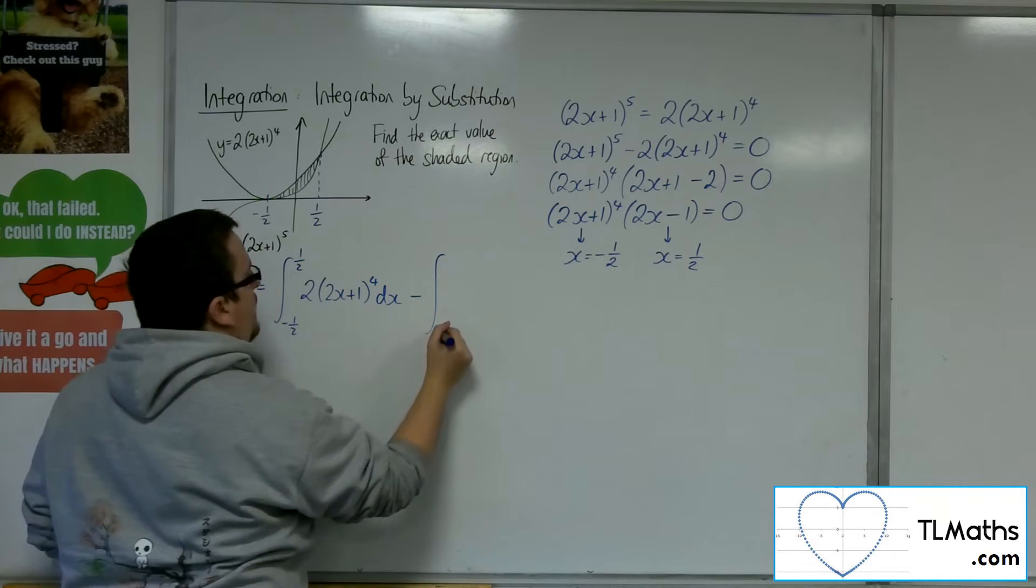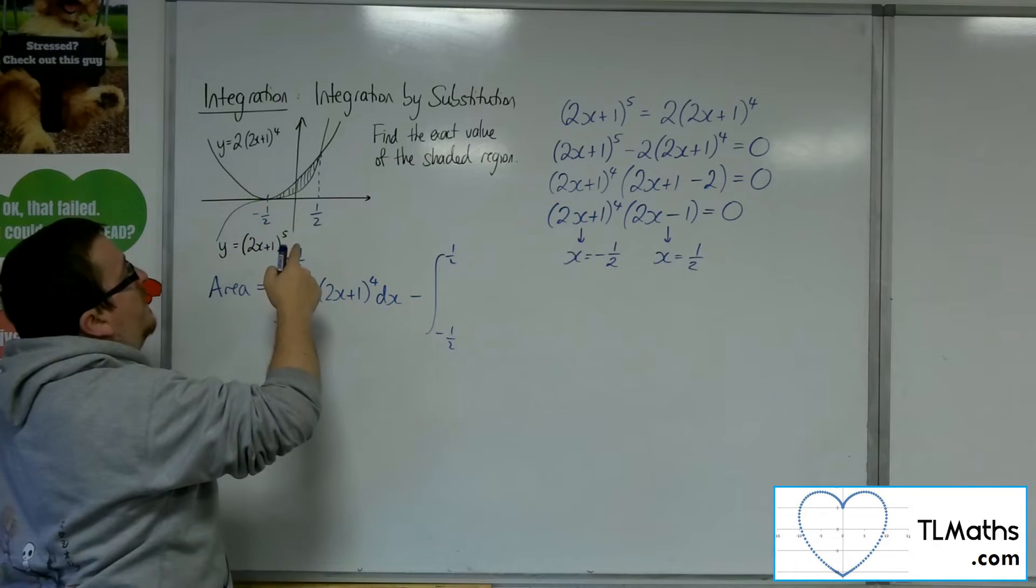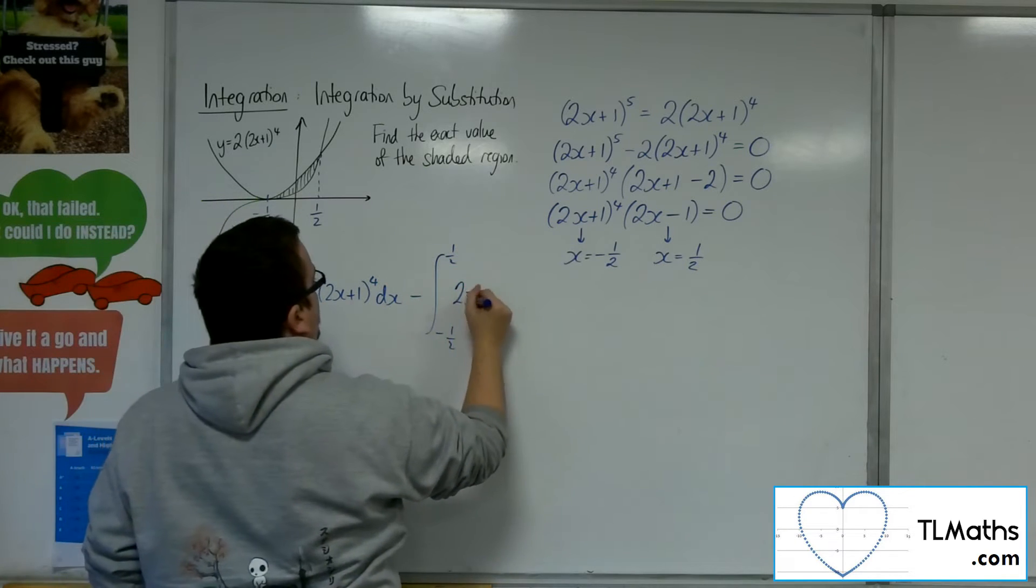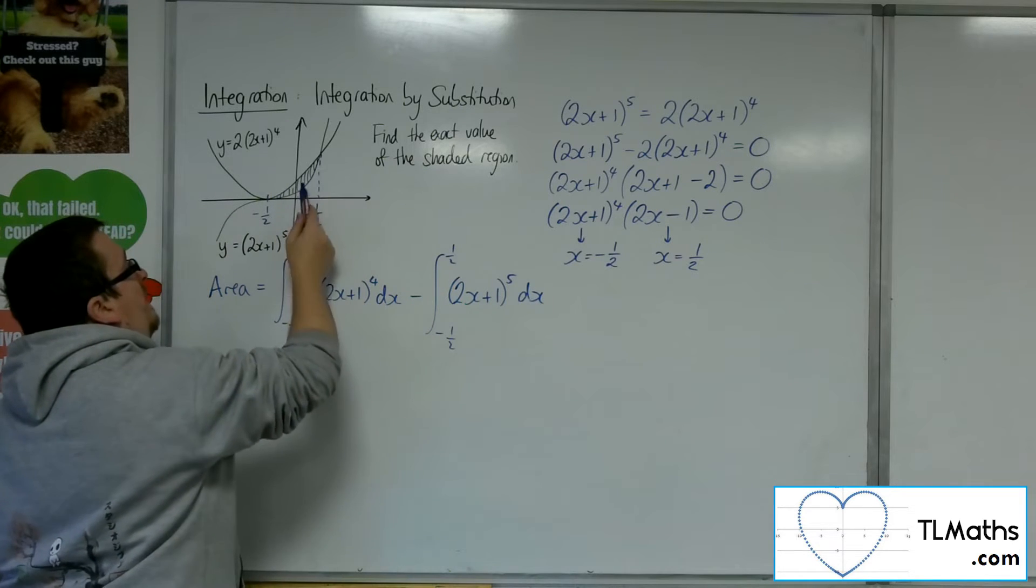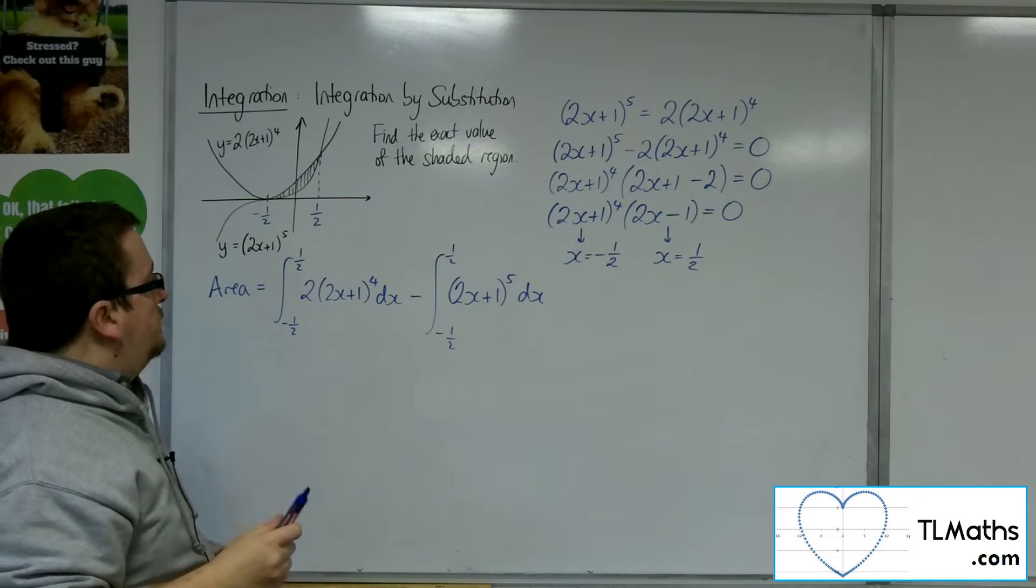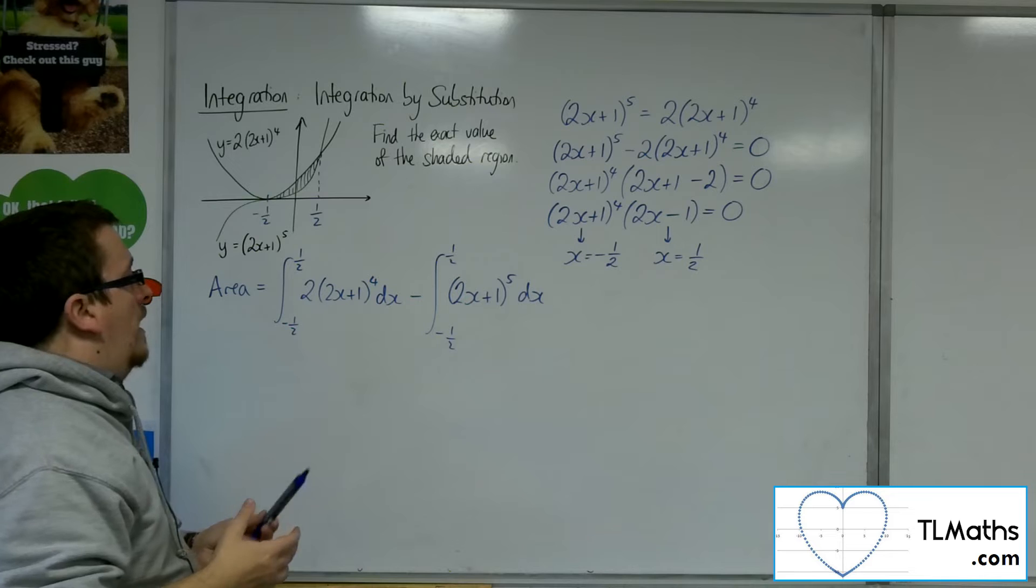And I need to take away the integral between minus 1 half and 1 half of the lower curve, the 2x plus 1 to the 5, because what that will do is it will leave me with that shaded region. So these are the two integrals I actually want to evaluate.